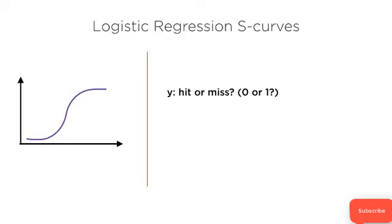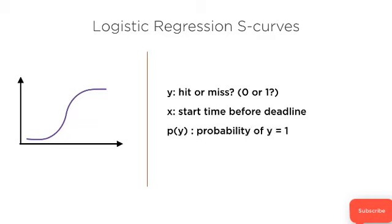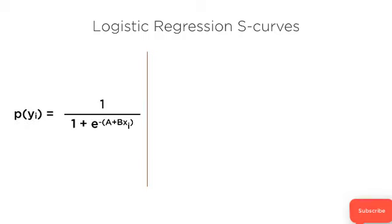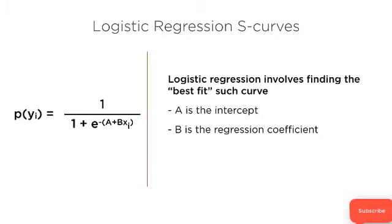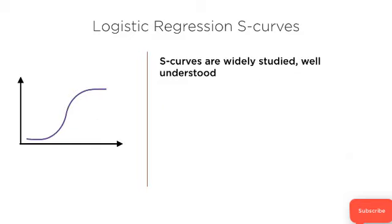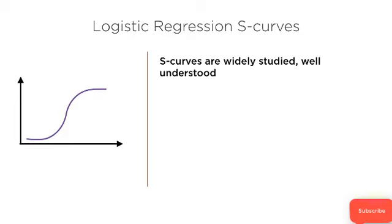Y is hit or miss — 0 or 1 — this is binary classification. X is the start time before your deadline. P is the probability of Y equal to 1, which is what you get when you apply logistic regression to your X data. When you use logistic regression as your classification model, you're fitting an S curve on your data. Logistic regression involves finding the best fit S curve where A is the intercept and B is the regression coefficient. The output is a probability score, and the mathematical formula is: probability of yi equals 1 divided by 1 plus e to the power of negative (A plus B times xi). S curves are widely studied and well understood — all you need to know is that logistic regression tries to fit an S curve to estimate probabilities of outcomes.